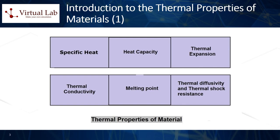2. Specific heat capacity, C. This is the amount of heat energy required to raise the temperature of a certain amount of the material by a certain temperature interval, usually 1 degree Celsius or 1 Kelvin. It is usually denoted by the symbol C and is measured in units of joules per kilogram per Kelvin (J/kg·K). This property is dependent on the material's structure and its state: solid, liquid, or gas.